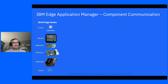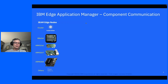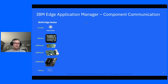IBM Edge Application Manager edge nodes can either be Kubernetes clusters or small computers or large computers. I've got pictures of small computers here — X86-64, ARM32v6, ARM32v7, ARM64v8 — and the community has also produced Power and RISC-V versions of Open Horizon, the underlying software.